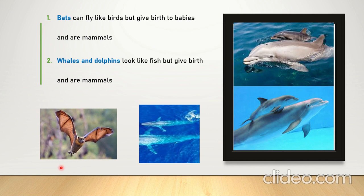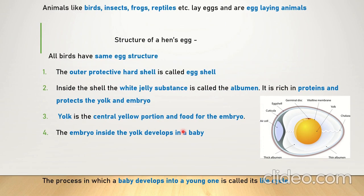So bats give birth and are mammals. A second interesting fact: whales and dolphins look like fish but give birth, so they are mammals. Fish lay eggs, but dolphins and whales, despite looking like fish, give birth to young ones. So they are mammals.